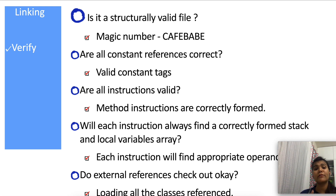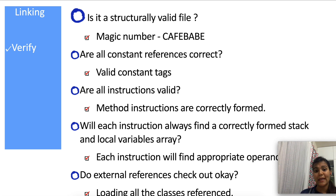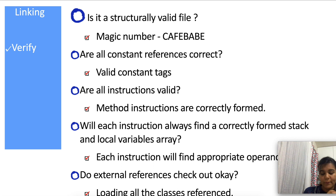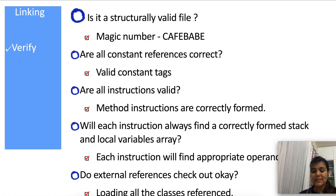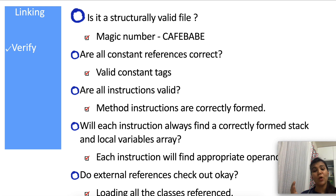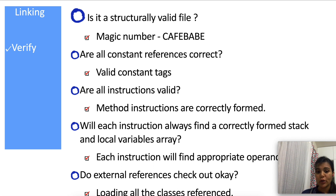The second check verifies how many constants there are and whether the tags on the constants are valid enough to make them constant references. Third: are all instructions valid? A method is basically a set of instructions, and if these instructions are not correctly formed then the method will not be able to execute. Fourth: will each instruction always find a correctly formed stack and local variables array? When there's a method with instructions, those instructions will have some operands and some local variables. All operands should be properly present in the operand stack, and local variables should not cause an overflow or underflow of the stack.